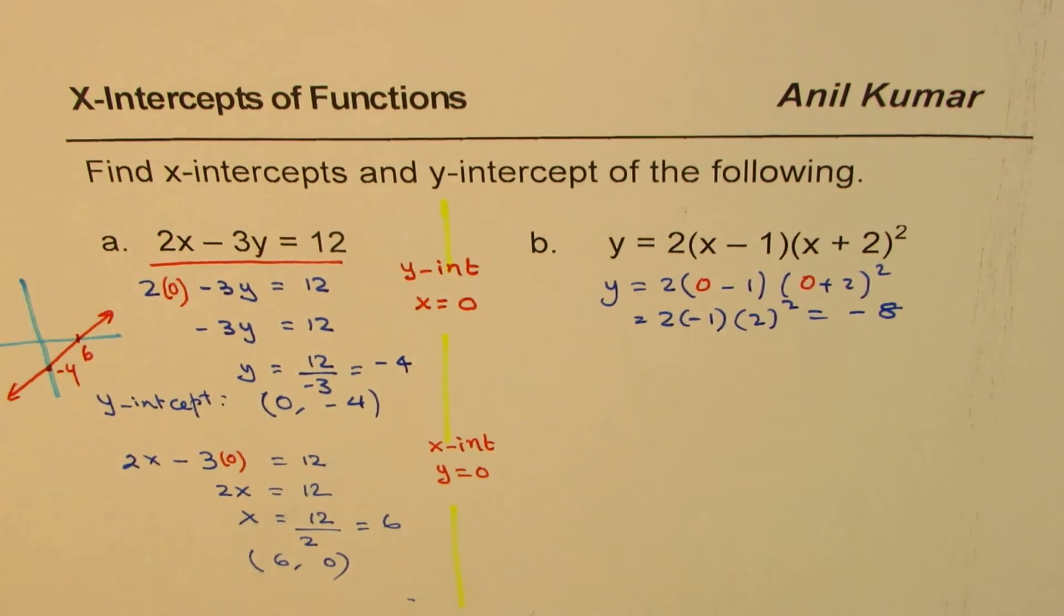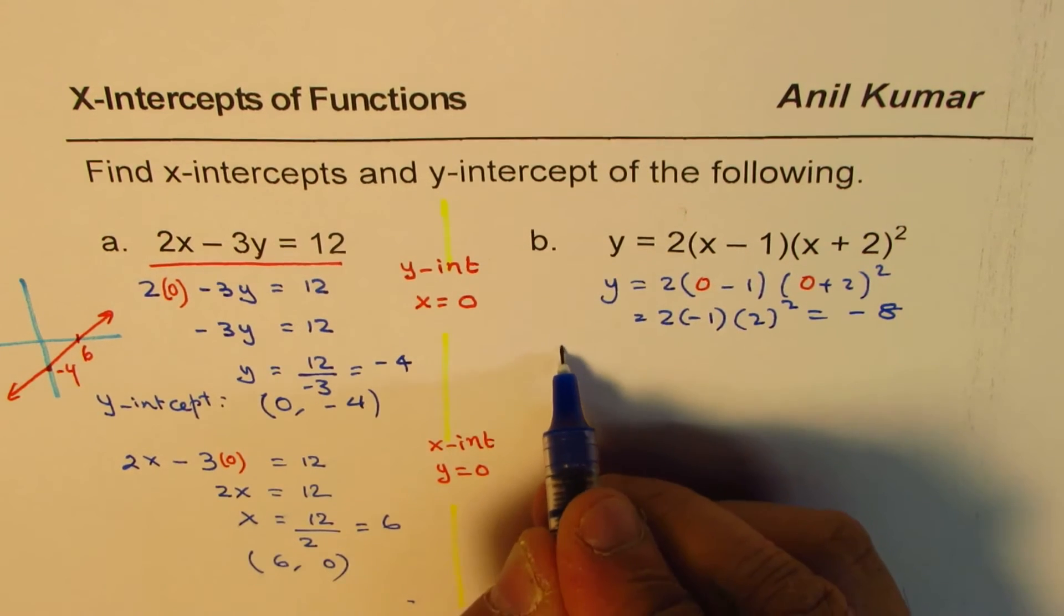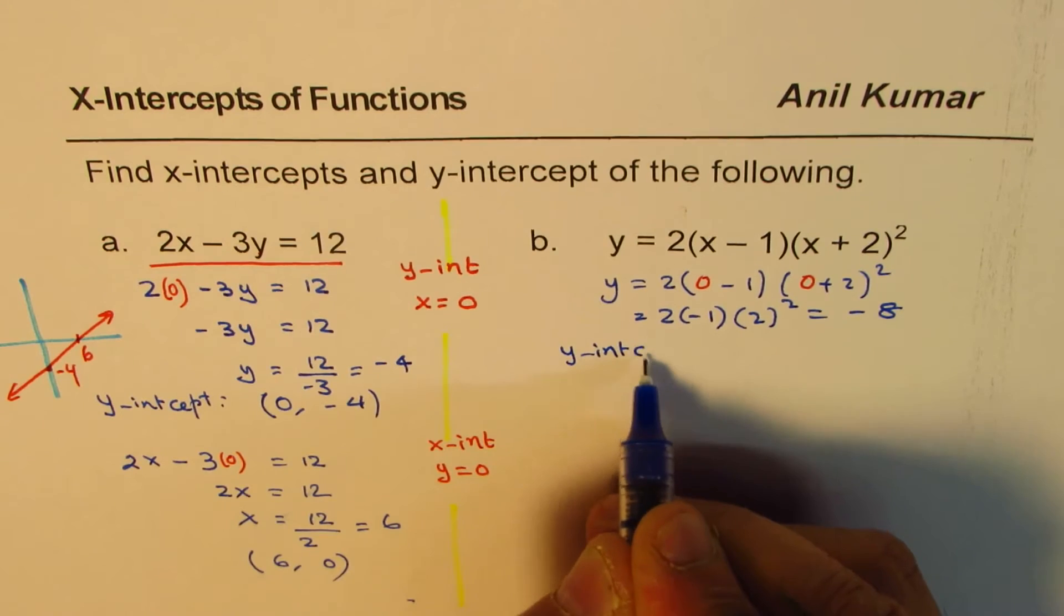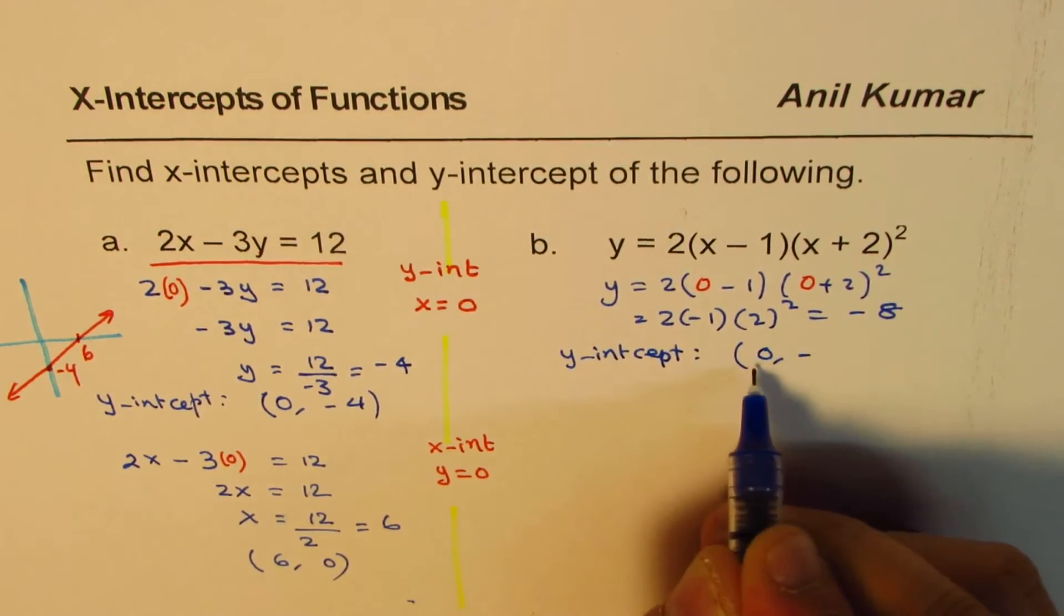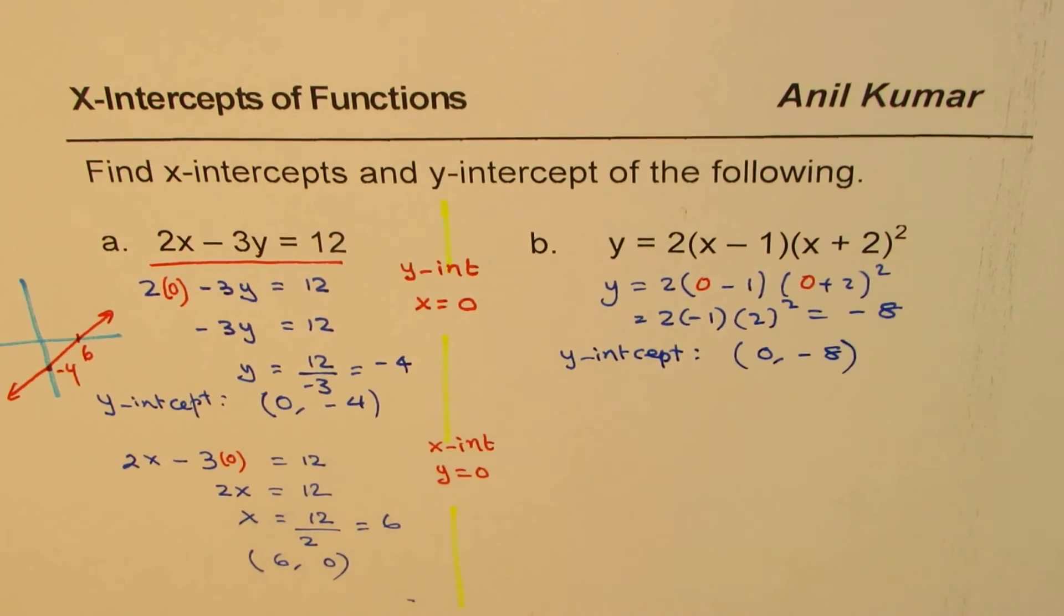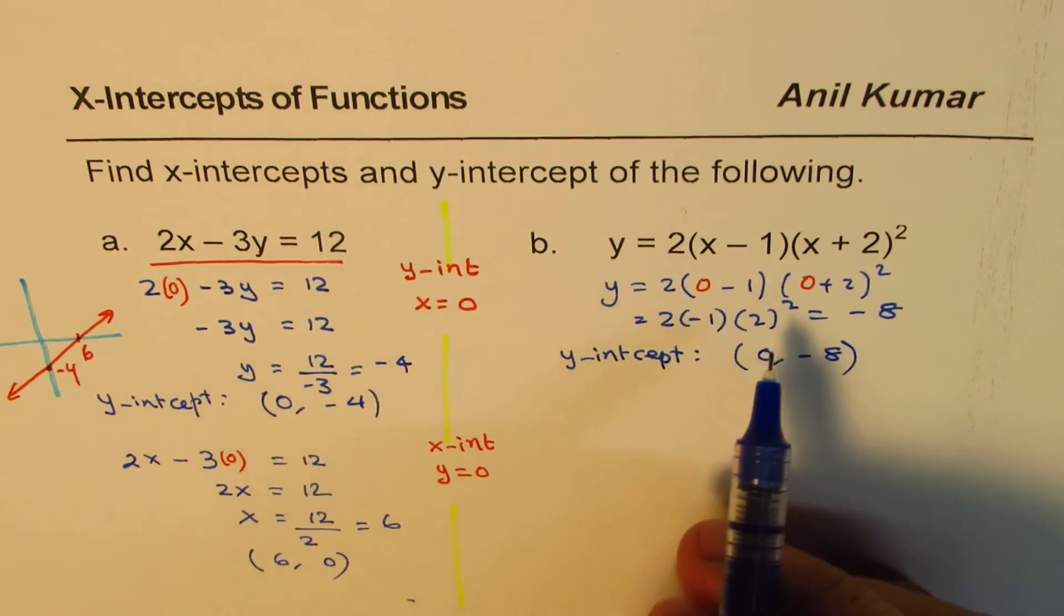So we get y-intercept as minus 8. There's one y-intercept which is at x equals 0, y equals minus 8. Now let us find the x-intercept.